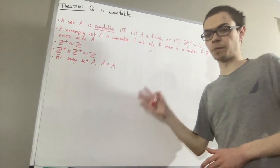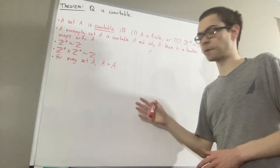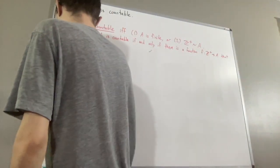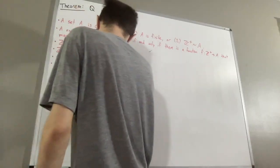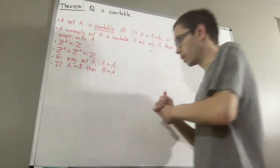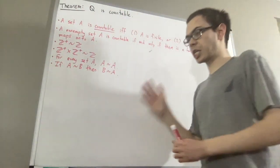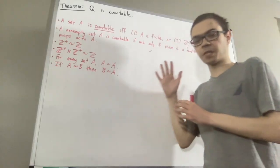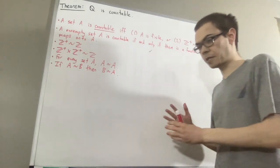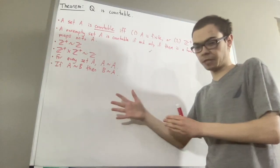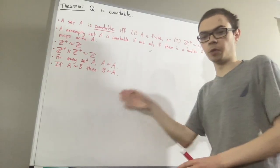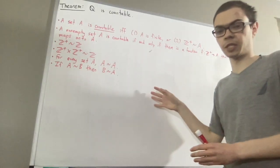Just take the inverse of the bijection from A to B. Also, if there is a bijection from A to B, and there is a bijection from B to C, then there is a bijection from A to C — just take the composition of those two bijections.